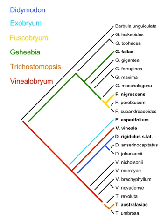Evolutionary taxonomy differs from strict pre-Darwinian Linnaean taxonomy, which produced orderly lists only, in that it builds evolutionary trees. While in phylogenetic nomenclature each taxon must consist of a single ancestral node and all its descendants, evolutionary taxonomy allows for groups to be excluded from their parent taxa – for example, dinosaurs are not considered to include birds, but to have given rise to them – thus permitting paraphyletic taxa.